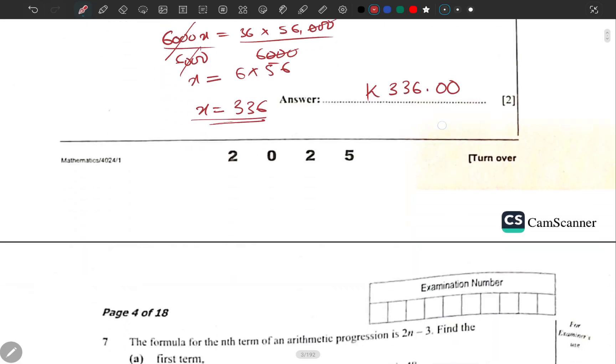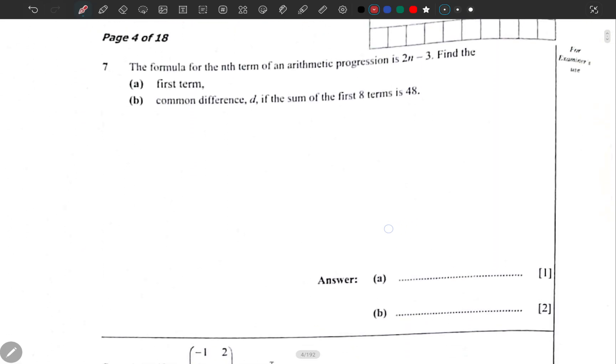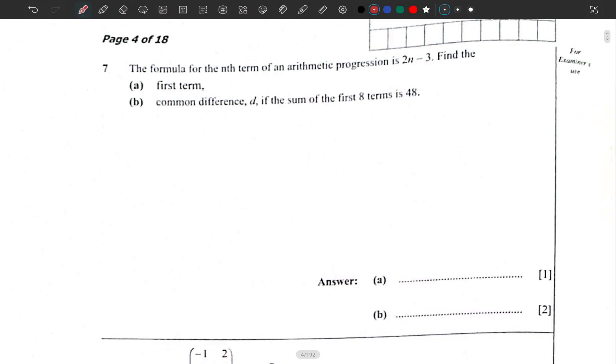Question 7: The formula for the nth term of an arithmetic progression is 2n minus 3. Find the first term. They are saying the formula for the nth term is 2n - 3. This one has been already worked for you.